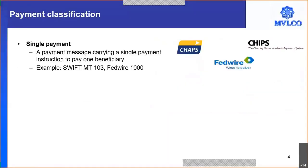Let me now move to the next point. We'll talk about classification of a payment. When we want to make a payment, it could be of multiple types. One type is a single payment — for example, I want to make a payment to Alok. That would be a single payment from me to Alok. I send a single instruction to my bank, which executes it and carries it to the beneficiary, Alok. A payment message is created carrying a single payment instruction to pay one single beneficiary.